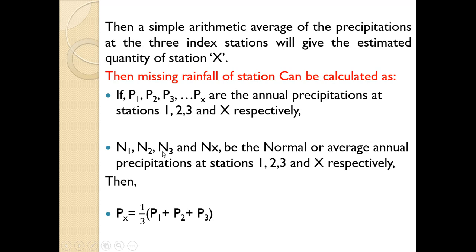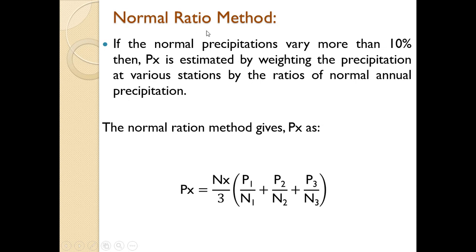So in this case, if the normal or average annual precipitation is within 10%, the simple arithmetic mean method is used. If the normal precipitation varies more than 10%, then the normal ratio method is used, where the average precipitation is estimated by weighting the precipitation at various stations by the ratios of normal annual precipitation. The formula is: Px = (Nx / 3) × (P1/N1 + P2/N2 + P3/N3).